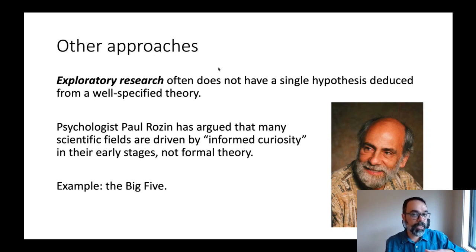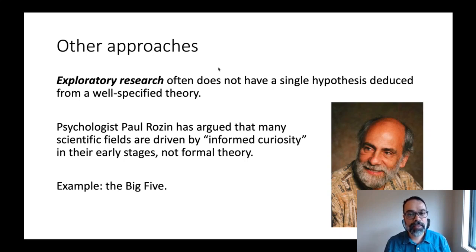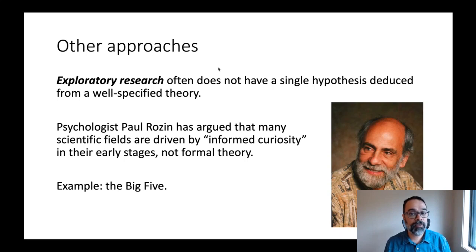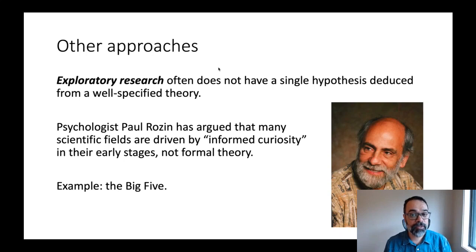Another example Rozin discusses is the discovery of the double helix structure of DNA, from Rosalind Franklin, James Watson, and Francis Crick. Rozin says they didn't start with a mathematical theory predicting a double helix — they just knew that discovering the structure would be very useful in biology. So they used different techniques to see if they could describe the structure without necessarily testing a specific theory. They just went in and looked, found the double helix, and it led to all sorts of important developments afterwards.